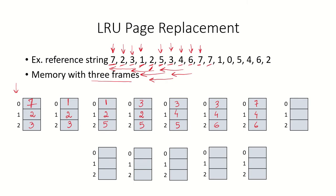There is another reference for page 7 — it is already in memory, so it is a hit. Now a reference for page 1: looking backwards, page 7 has been used recently, page 6 has been used recently, and page 4 is the least recently used. So page 4 will be replaced by page 1, causing a page fault again.